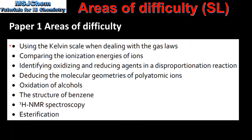Moving on to the second slide, we have using the Kelvin scale when dealing with the gas laws. When answering questions on the ideal gas equation, Charles's law, Boyle's law, or Gay-Lussac's law, you must convert from degrees Celsius to Kelvin. To do this you either add 273 or subtract 273. For example, 25 degrees C is 298 Kelvin.